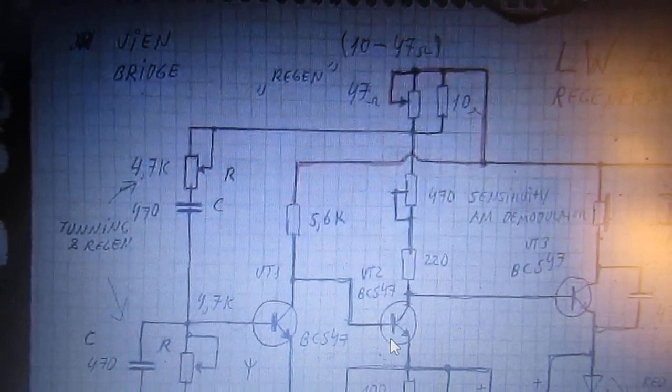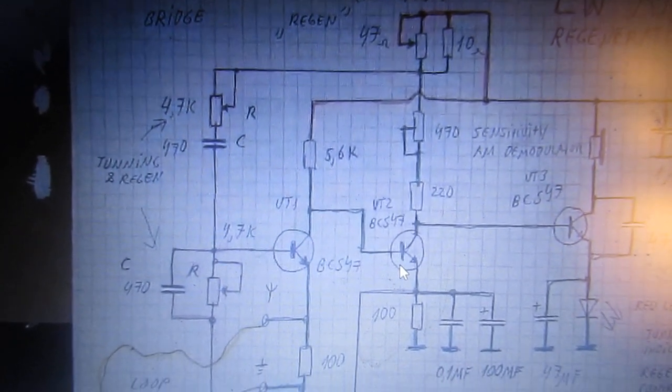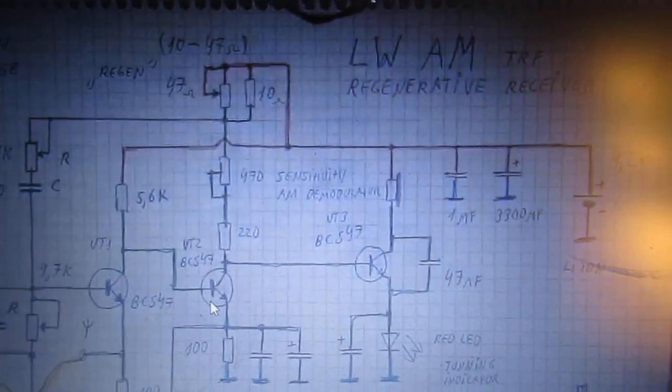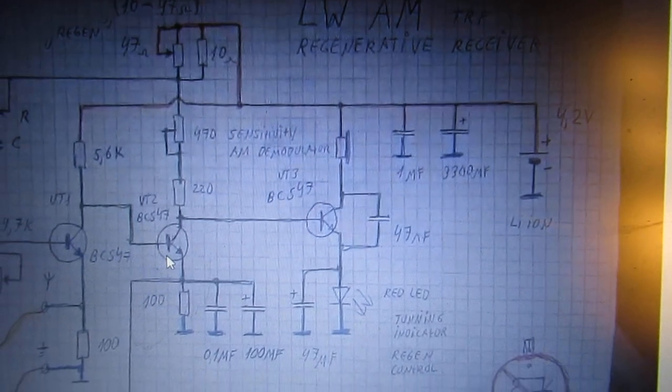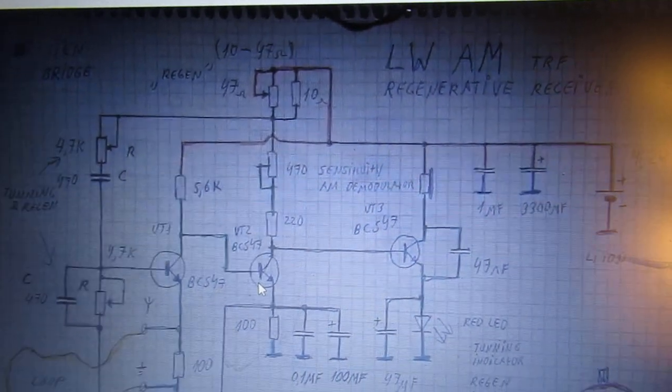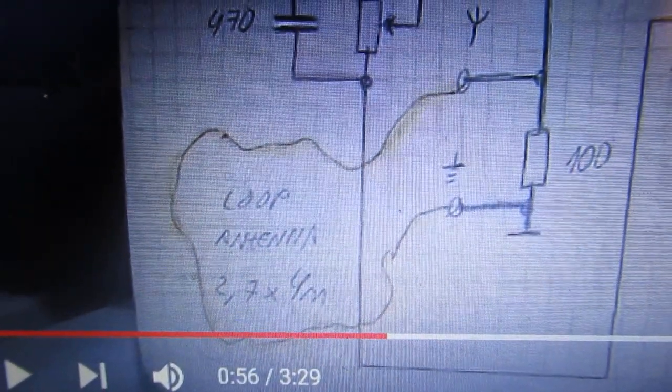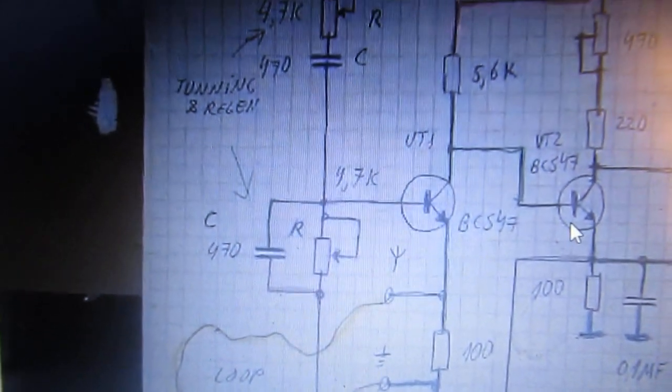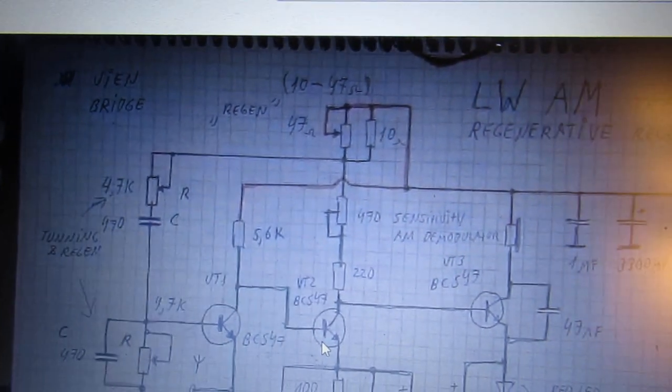The whole idea of using a Wien bridge to receive radio stations on the VLF, very low frequencies, is in my opinion a brilliant idea. Loop antenna, etc. Of course I will give the link to that circuit.